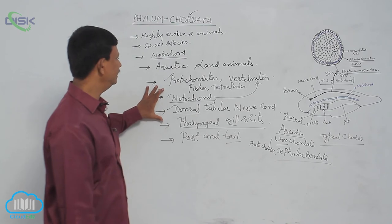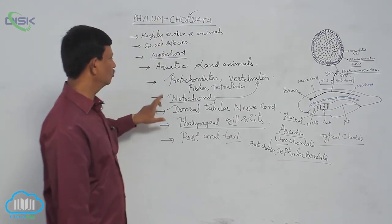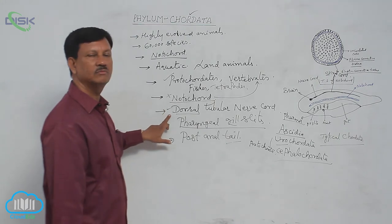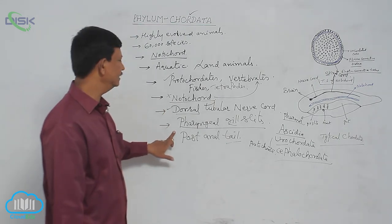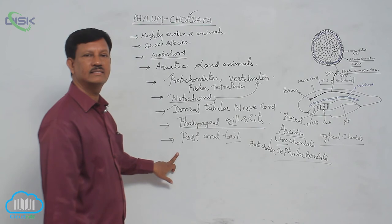These are the four main characters or chief characters present in chordata: they are notochord, dorsal tubular nervous system, pharyngeal gill slits, and post-anal tail.